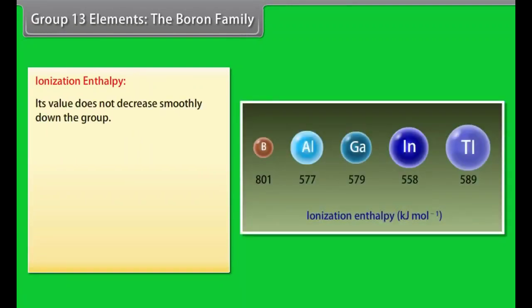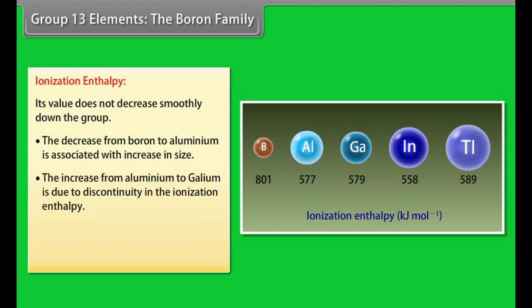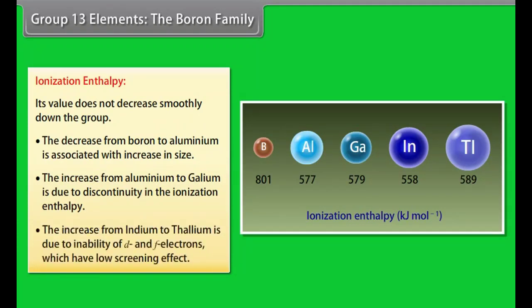Ionization enthalpy. Its value does not decrease smoothly down the group. The decrease from boron to aluminium is associated with increase in size. The increase from aluminium to gallium is due to discontinuity in the ionization enthalpy. The increase from indium to thallium is due to inability of d and f electrons which have low screening effect.